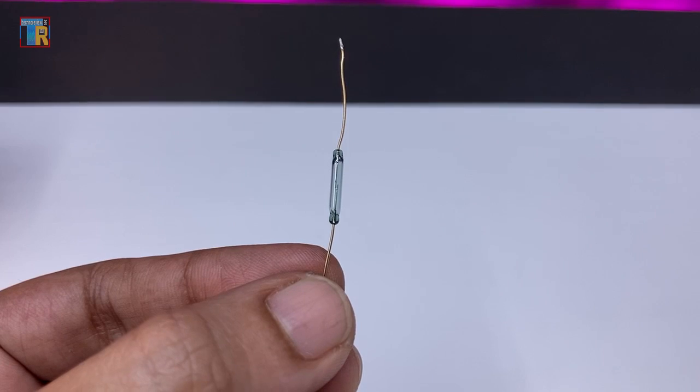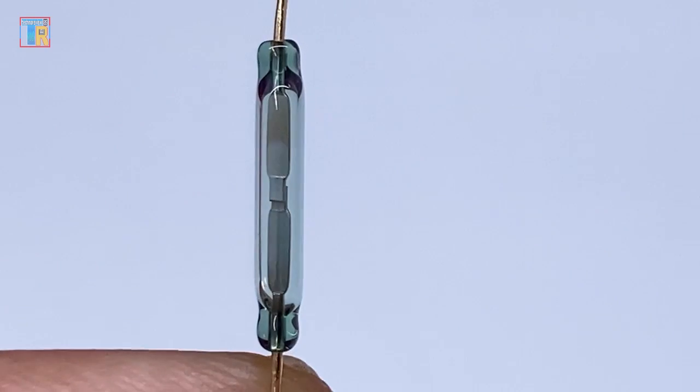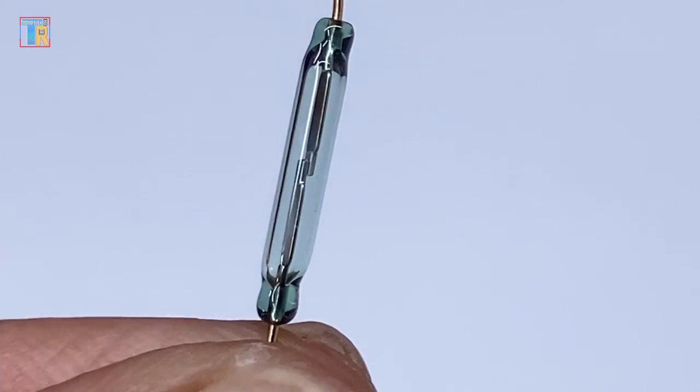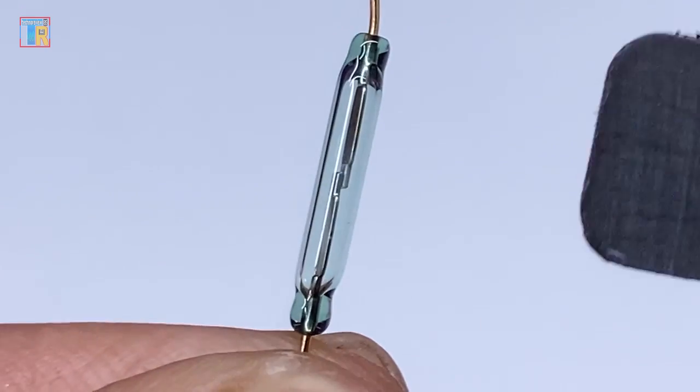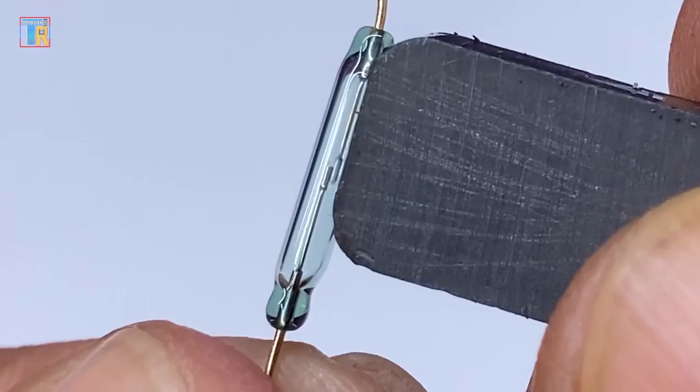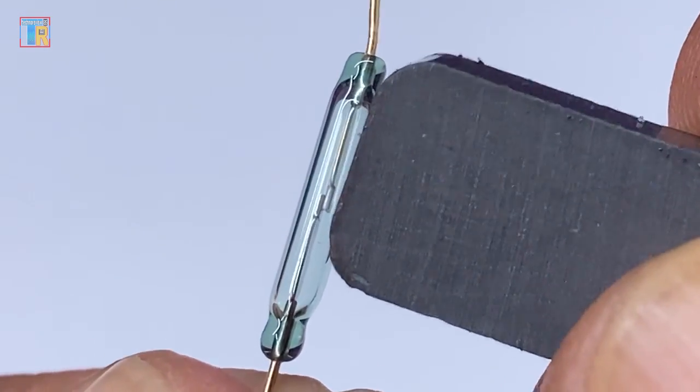A reed switch is basically two thin metal reeds sealed in a glass tube. When a magnet comes close, the magnetic field pulls the reeds together and completes the circuit, just like a tiny magnetic switch.